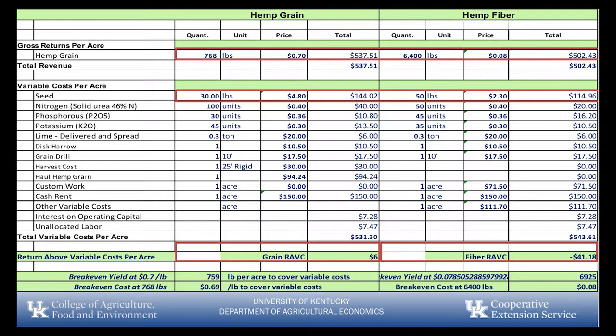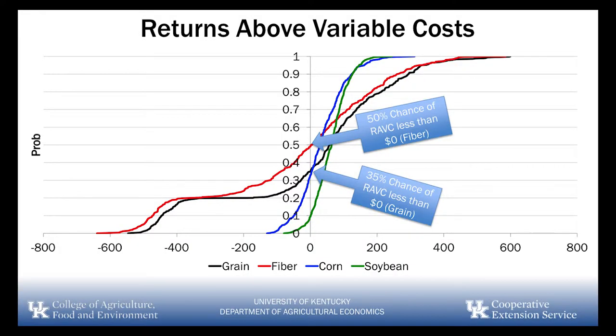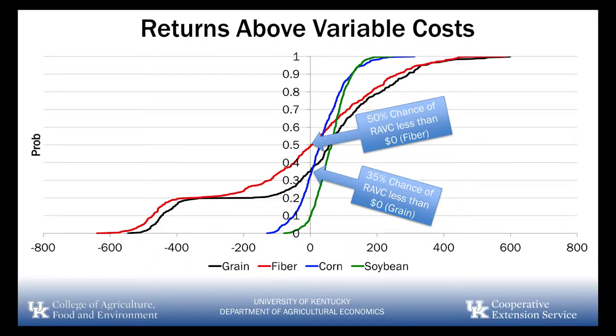On the grain side of things, I'm looking at about a $6 per acre return above variable cost, so fairly near break even. I put this in a graph to make it easier to understand. The red line is fiber, the black line is grain. There's tremendous variability — potentially a $600 an acre loss all the way to a $600 an acre gain. That is tremendous variability in this market, largely the result of no crop insurance, no safety net, and a lot of unknowns.